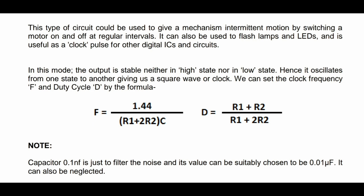You can use this circuit in a washing machine which works clockwise for some time and anti-clockwise for some time — you can change the duty cycle for that. This type of circuit can give a mechanism intermittent motion by switching the motor on and off at regular intervals. It can also be used to flash lamps and LEDs for signal indication, and is useful as a clock pulse for other digital ICs and circuits.